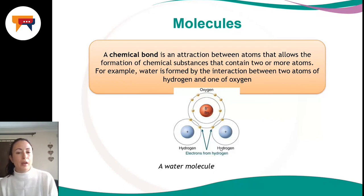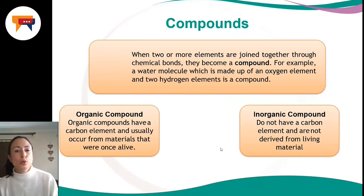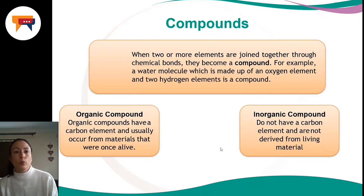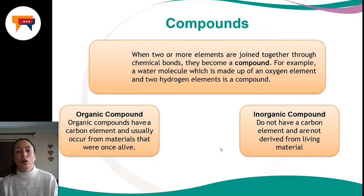A water molecule is made up of an oxygen element and two hydrogen elements and is a compound. Whereas a compound is specifically when two or more different elements are joined together through a chemical bond. You can't get a compound of oxygen alone, because oxygen hasn't bonded to anything else — it's still an element. However, if you put oxygen with carbon, it becomes carbon dioxide, and it is no longer an element but a compound. You can get molecules of carbon dioxide, water, oxygen, nitrogen, and lead.